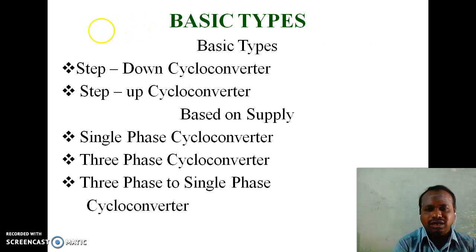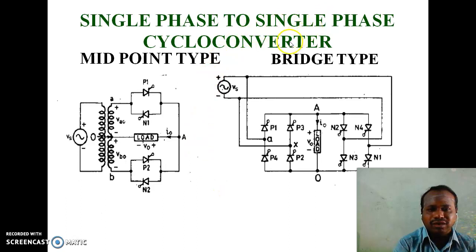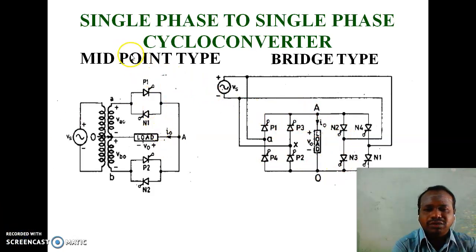Basic types of cyclo-converter: there are two basic types — step-down cyclo-converter and step-up cyclo-converter. Based on supply, cyclo-converters can be classified as single-phase cyclo-converter (input single-phase AC, output single-phase AC), three-phase cyclo-converter (input three-phase AC, output three-phase AC), and three-phase to single-phase cyclo-converter. For single-phase to single-phase cyclo-converters, there are two types of power circuits: midpoint type and bridge type.